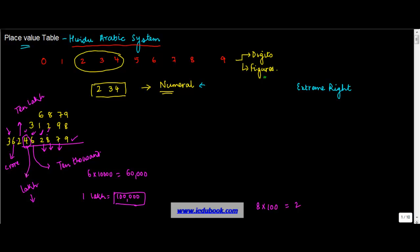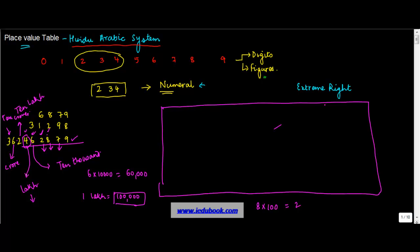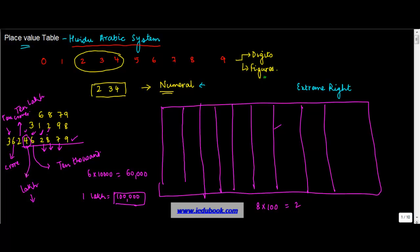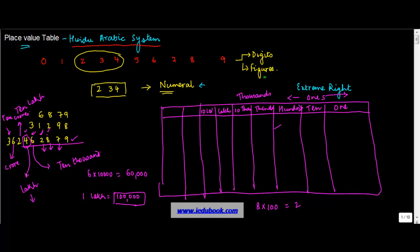Just as you had 1,000, then 10,000, then lakh, then 10 lakh — the next one before 10 lakh is known as a crore, and the one before that is 10 crores. So drawing a place value table from the right: 1, 10, 100 — these three are also known as ones — then thousands, 10 thousands, lakh, 10 lakh, crore, 10 crore.